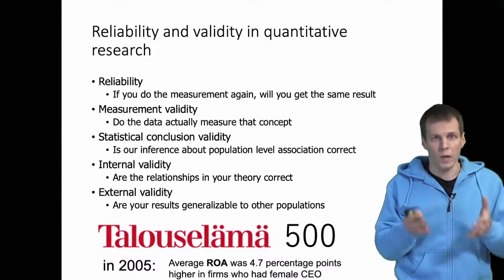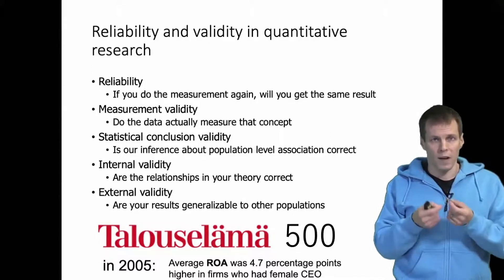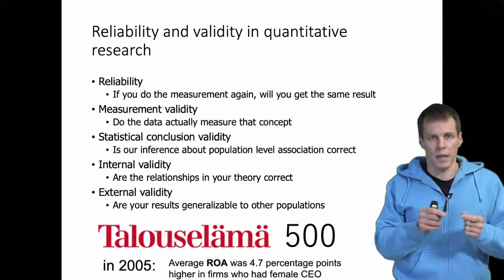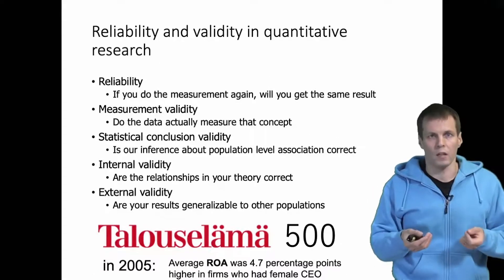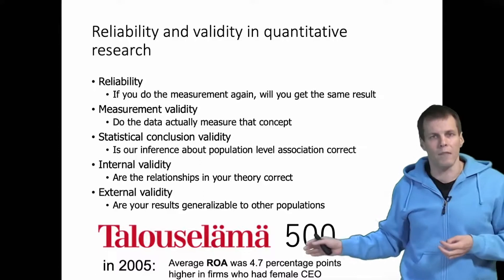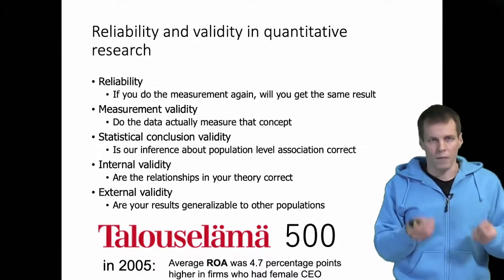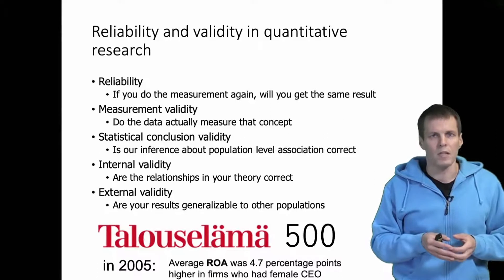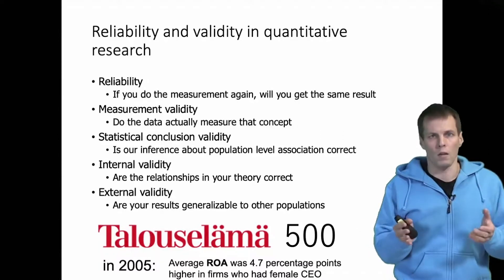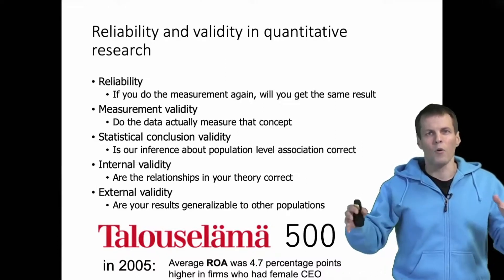Internal validity refers to whether the second and third conditions for causality are true — is the association valid evidence for a causal relationship? Have we ruled out reverse causation, and have we ruled out any alternate explanations? Finally, external validity is about generalizability. If we have established a clear causal relationship — that naming a woman as CEO of one of the largest 500 Finnish companies causes profitability to increase — can we say that is true for all Finnish companies, or for all large companies in any country? External validity is about how broadly we can make our claim.